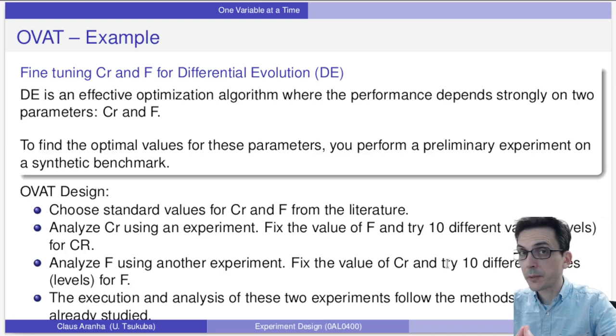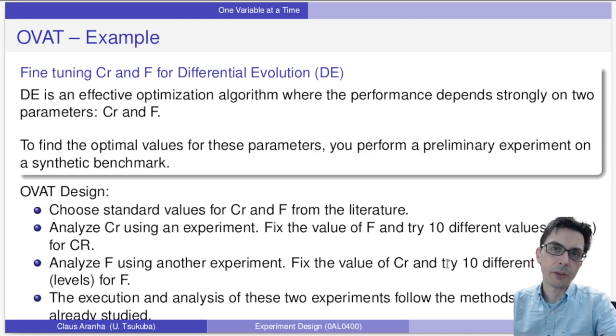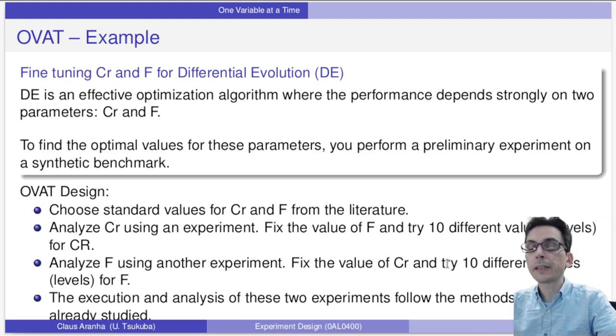The advantage of the OVAT design is that it's very easy and you can use all the techniques we've learned so far. The disadvantage is that it does not take into consideration the interaction effects of the variables. If you suspect interaction effects are weak, you could use OVAT as an initial experiment to identify which factors are more and less important for your experiment.